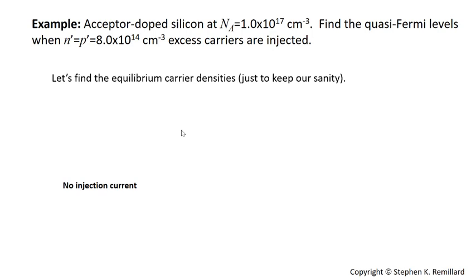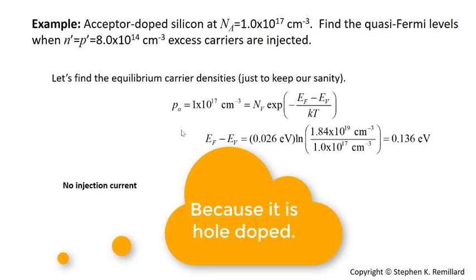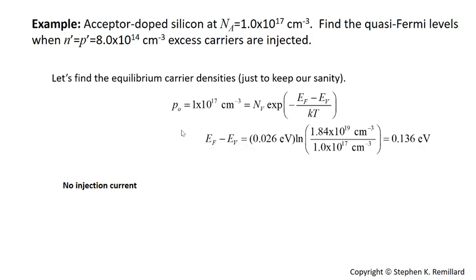Let's begin, just as I say, to preserve our sanity. Let's calculate carrier concentrations at equilibrium. Given this doping level, the 10 to the 17th, the hole carrier concentration is 10 to the 17th. So, we can also then calculate how high above the valence band edge you'll find the Fermi energy in our equilibrium semiconductor. In other words, we haven't turned on injection current yet. It's just not on yet. N sub v is 1.84 times 10 to the 19th. So you get that the Fermi energy is 0.136 electron volts above the valence band. I say save this. Apparently it's going to be needed.